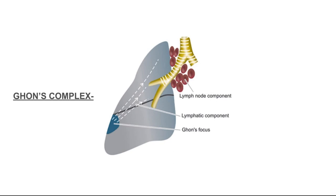This is a picture — you can see the blue colored area, which is focused in the upper part of the lower lobe, is the Ghon's focus. Along with the Ghon's focus, the lymphatic components are also involved, in which the infection is spread by the tubercle bacilli. This combination is called Ghon's complex.